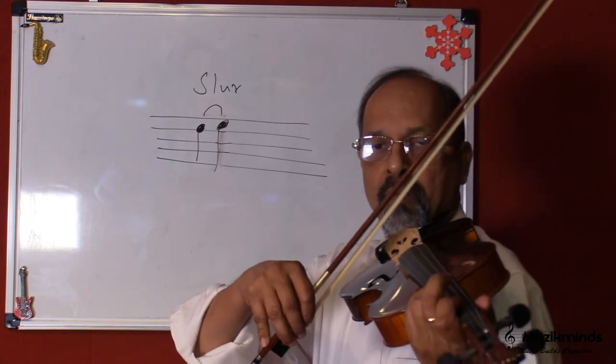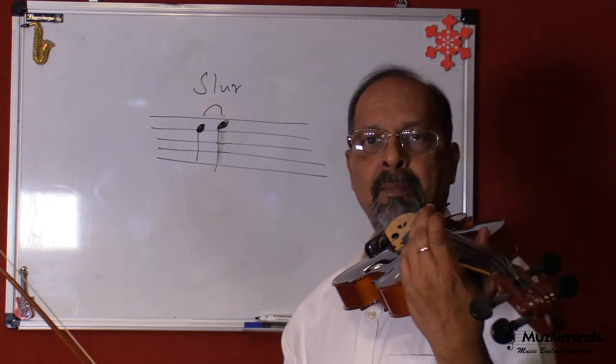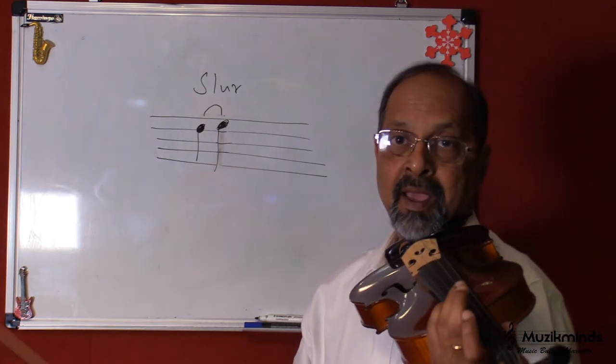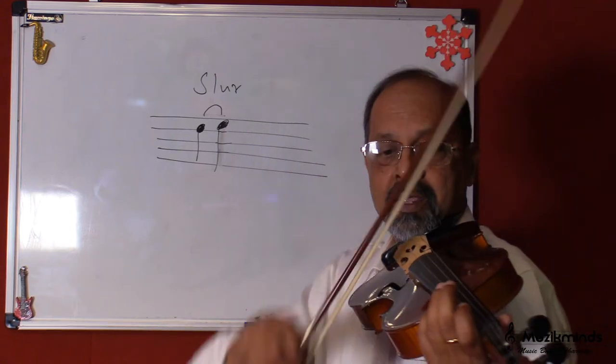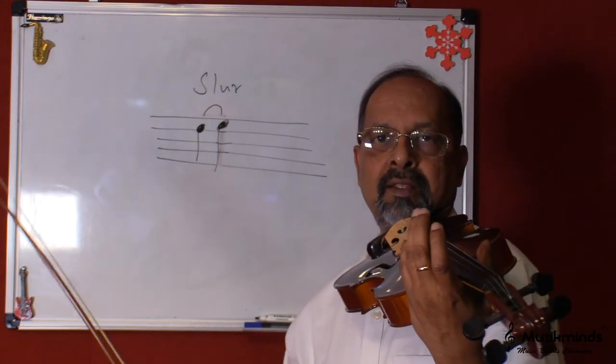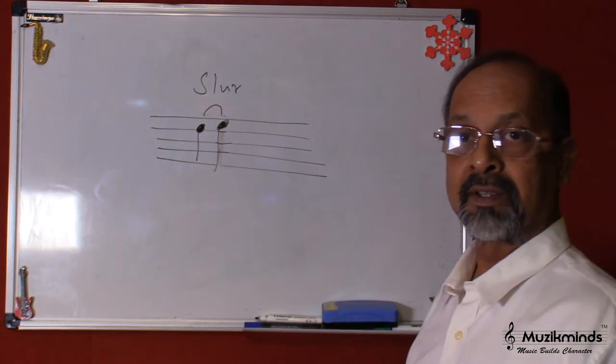Now if I play on one bow, I can play four notes together. So it's played on one bow, it's called a slur. I can play as many, I could play even eight. That's eight notes played together on one bow. So that's what's termed as a slur.